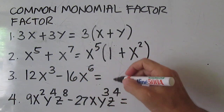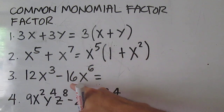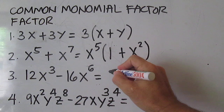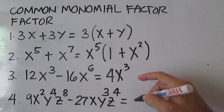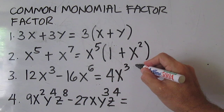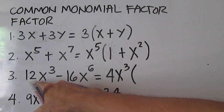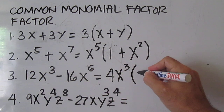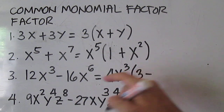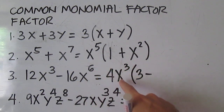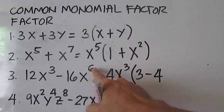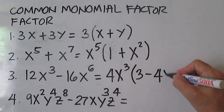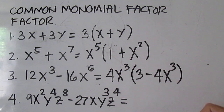For number three, the common monomial factor is 4x cubed. To get the other factor, divide 12x cubed by 4x cubed, which gives negative 3, minus 16x to the power of 6 divided by 4x cubed: 16 divided by 4 is 4, and x⁶ divided by x³ is x to the power of 3.